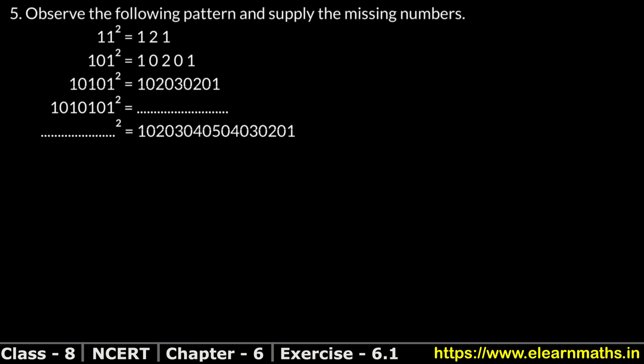11 squared is 121. Now, 101 squared is 10201. And 1001 squared is 1002001. If you can see here, there is a clear pattern forming.